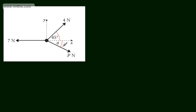In this video, we're going to continue our work with statics in equilibrium and look at finding unknown forces and angles. In the first question, we have a particle that's in equilibrium and we need to find the value of theta and the value of P. We've got our particle and we have three forces acting on it: a 4N force at an angle of 45 degrees, a force of PN at an angle of theta, and then 7 Newtons in the negative x direction, parallel to the x-axis.